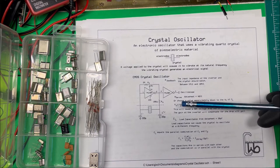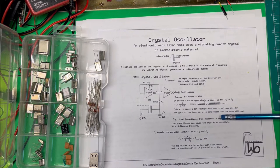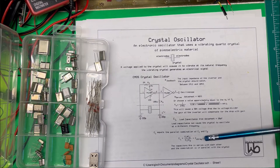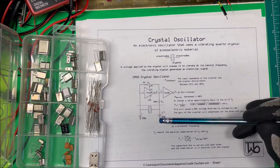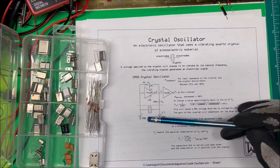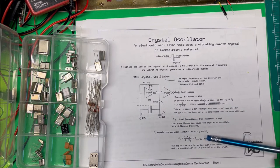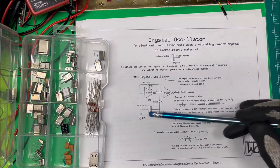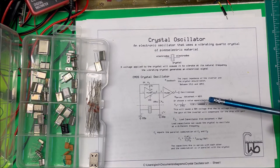So now it says that it's 20 picofarads. I'm using 22 here, so that would be 11, but we have to add another 5 to it. So it's going to be fairly close to 20, but 22 picofarads is pretty common.